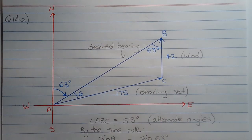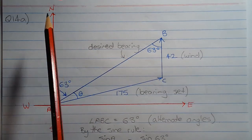The following diagram represents the situation. Vector AB represents the desired bearing of the plane, 63 degrees from true north.